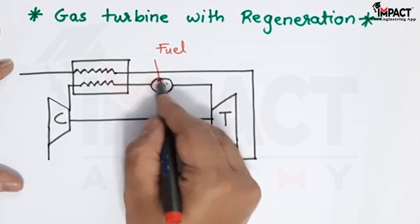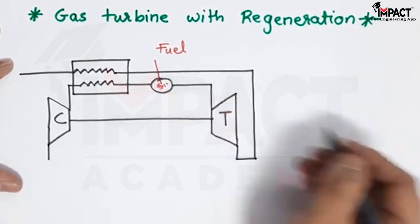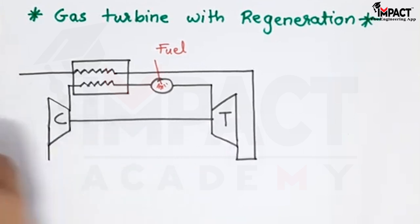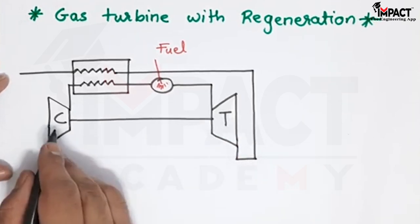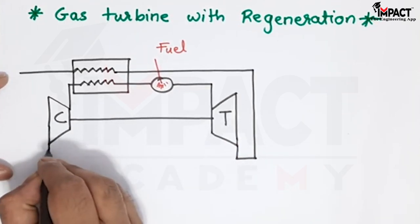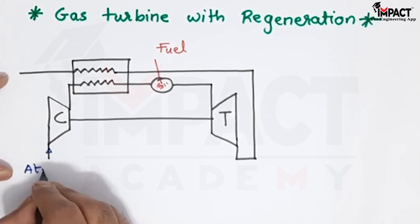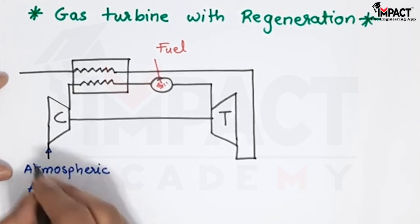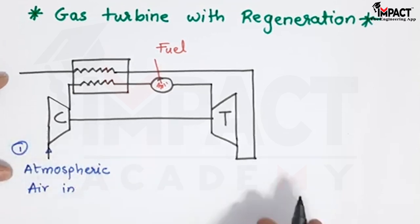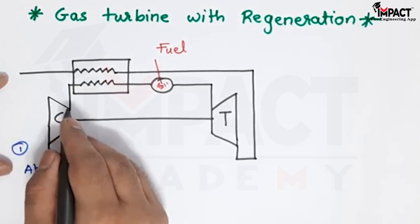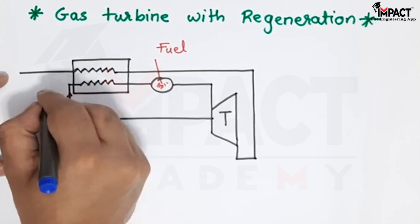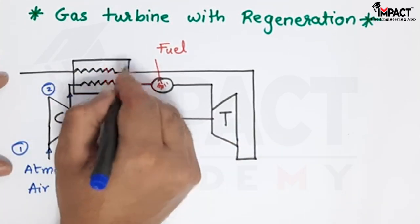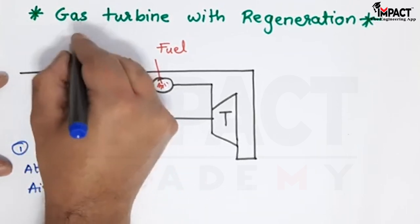This is the combustion chamber in which the fuel is injected or sprayed. Here we have a compressor which is directly coupled to the turbine. In the case of the compressor, we have atmospheric air as the inlet — this I will call state 1. Then into the compressor the air gets compressed, pressure and temperature increase, so we get state 2 out of the compressor. Now here we have a device called a heat exchanger.